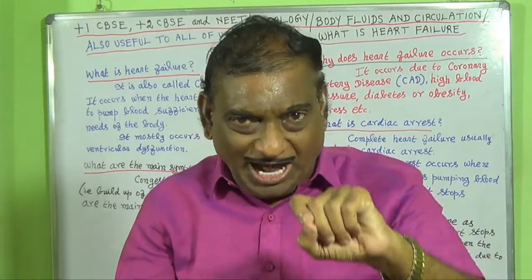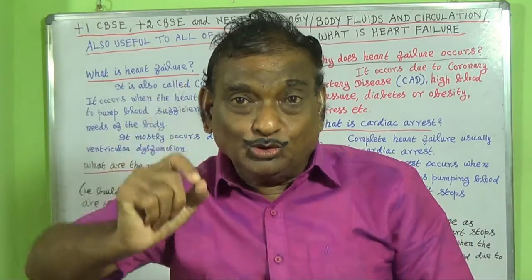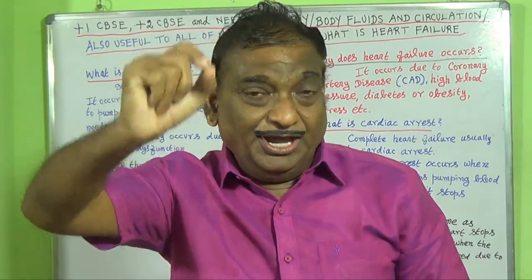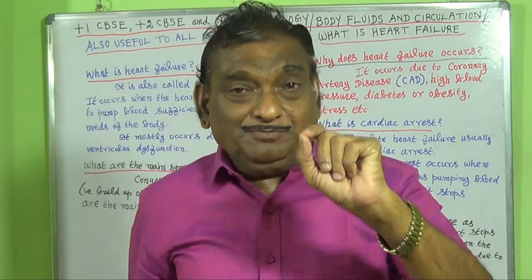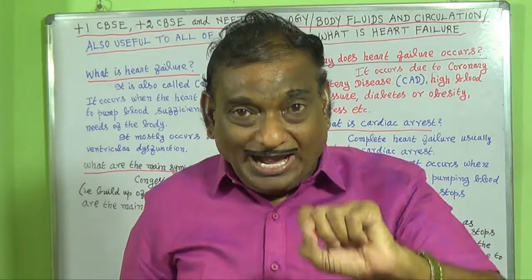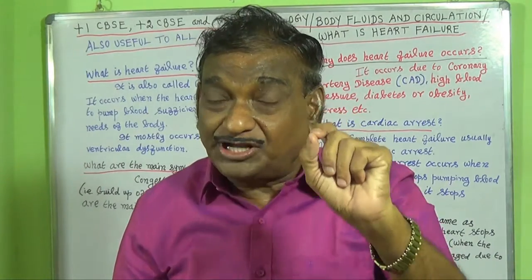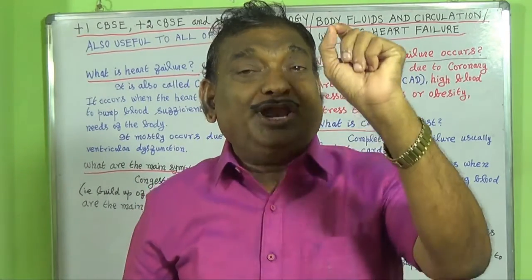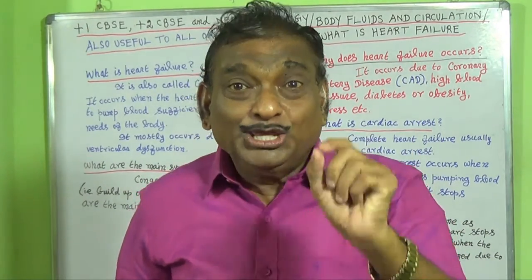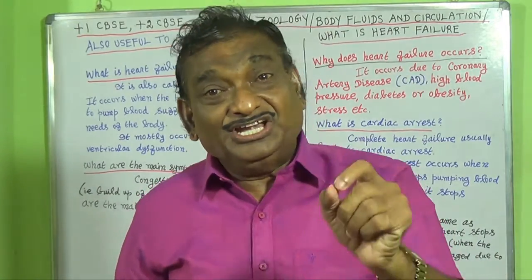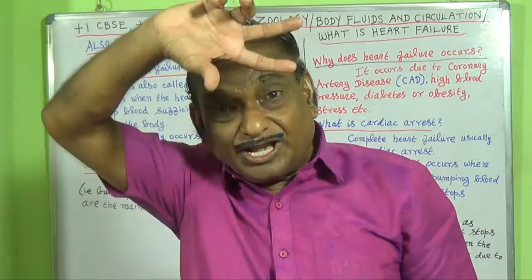The right ventricle is placed below and nearer to the right atrium. When the right ventricle contracts, the blood — that is impure blood, that is de-oxygenated blood — goes to the lungs through the pulmonary artery. This pulmonary artery carries impure, de-oxygenated blood from the heart to the lungs.